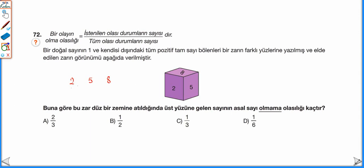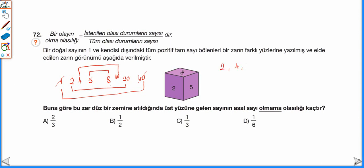Çarpanlar arasında 2, 5 ve 8 olan bir sayı 5 × 8 = 40 olabilir. 40 = 2 × 20 = 1 × 40. 1 ve 40 zarın yüzeyine yazılmıyor. Geriye kalan 2 sayı da 4 ve 10 olabilir, çünkü 4 × 10 = 40. Dolayısıyla zarın yüzeylerine yazılacak çarpanlar 2, 4, 5, 8, 10 ve 20'dir — 6 tane olası durum.